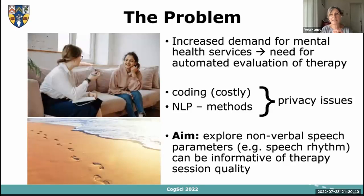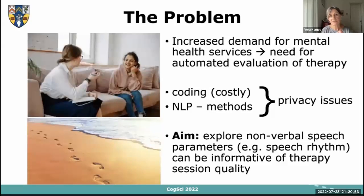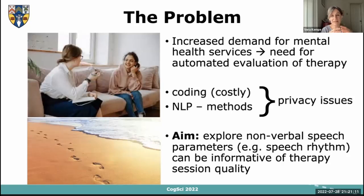Traditionally, to understand the efficacy of counseling and therapy, people have been manually coding recordings and then performed mainly qualitative analysis. More recently, natural language processing methods are trying to fill that gap. But both of these methods run into privacy issues because very often clients are reluctant to consent to have their data analyzed, even if they're told it's being analyzed by an AI.